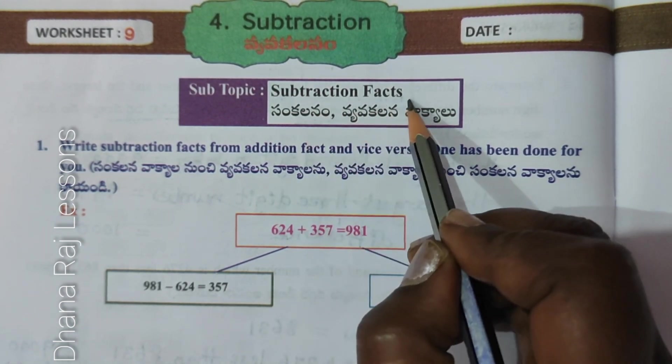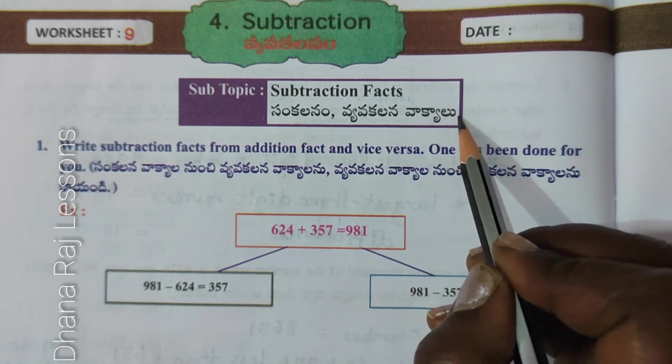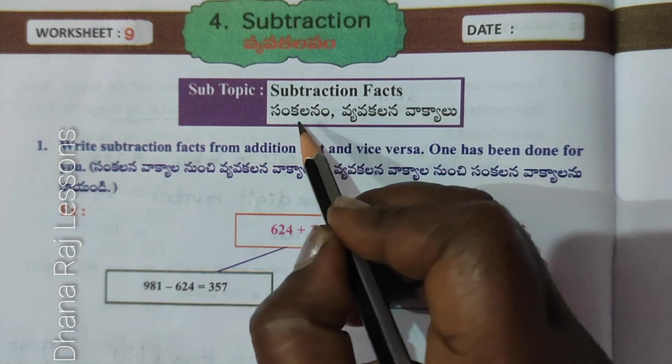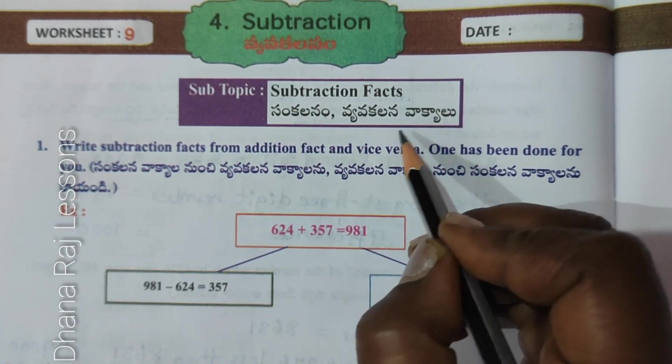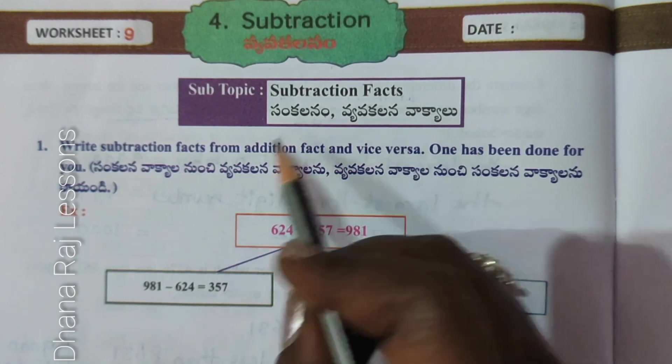Subtraction Facts — Sankalna Vyavakalna Valkyayavalu. Sankalna Mantra (addition rule): Koodi, plus. Vyavakalna Mantra (subtraction rule): this side, minus.